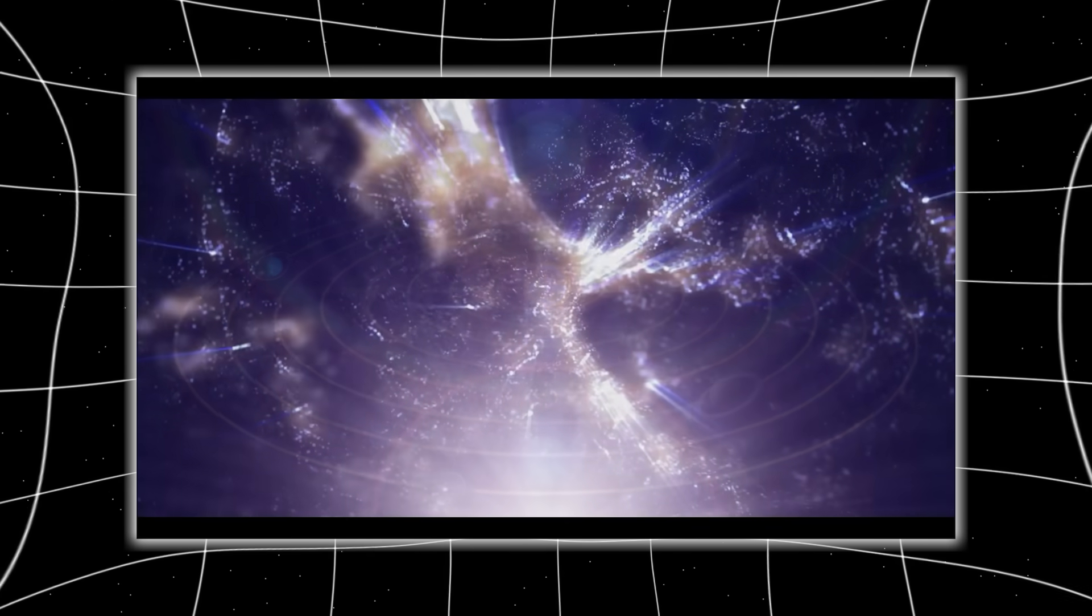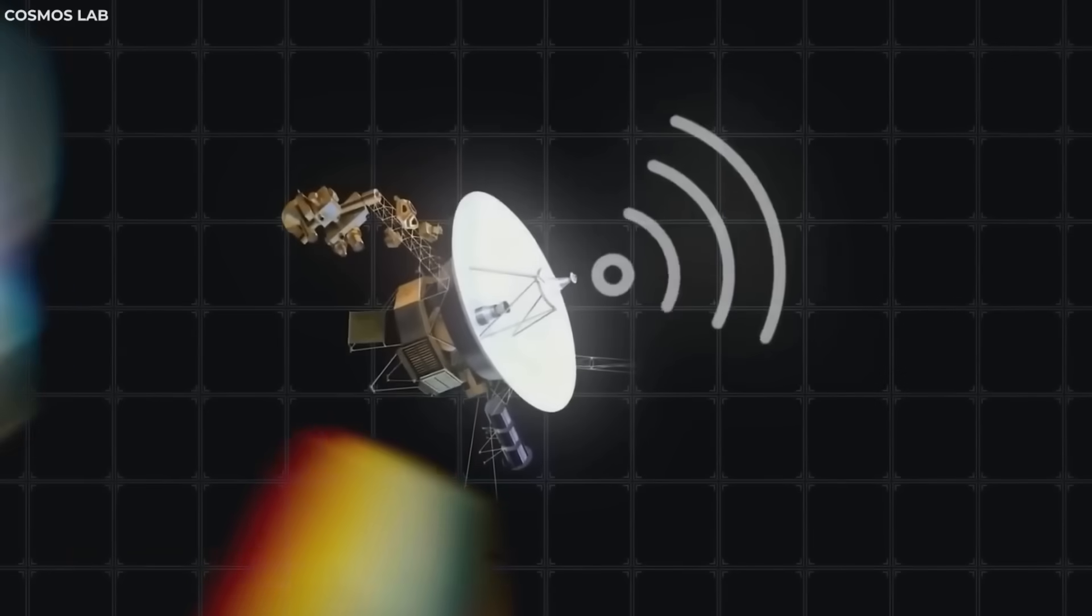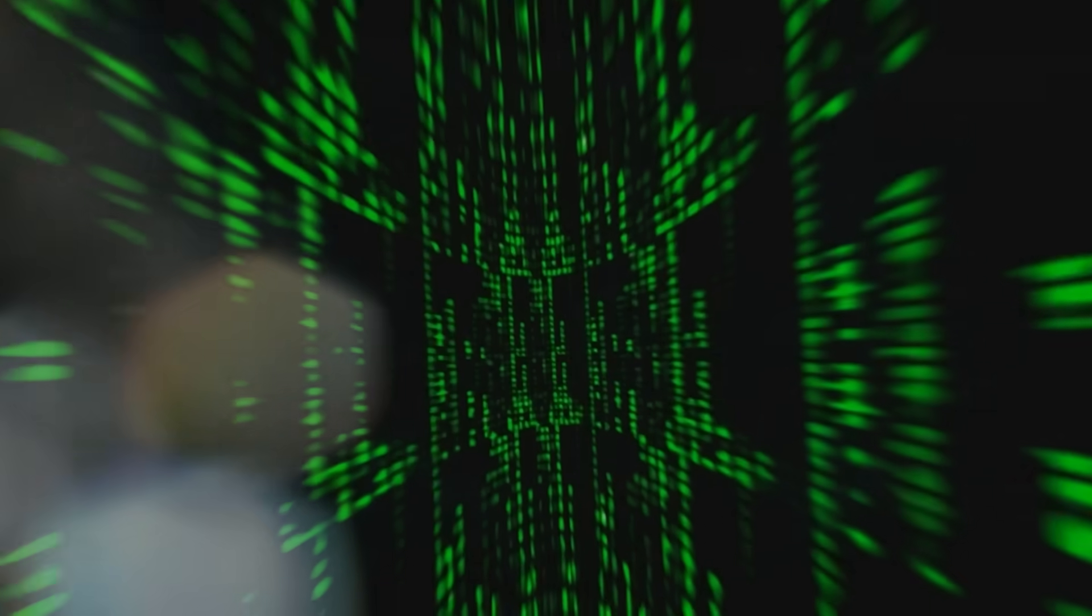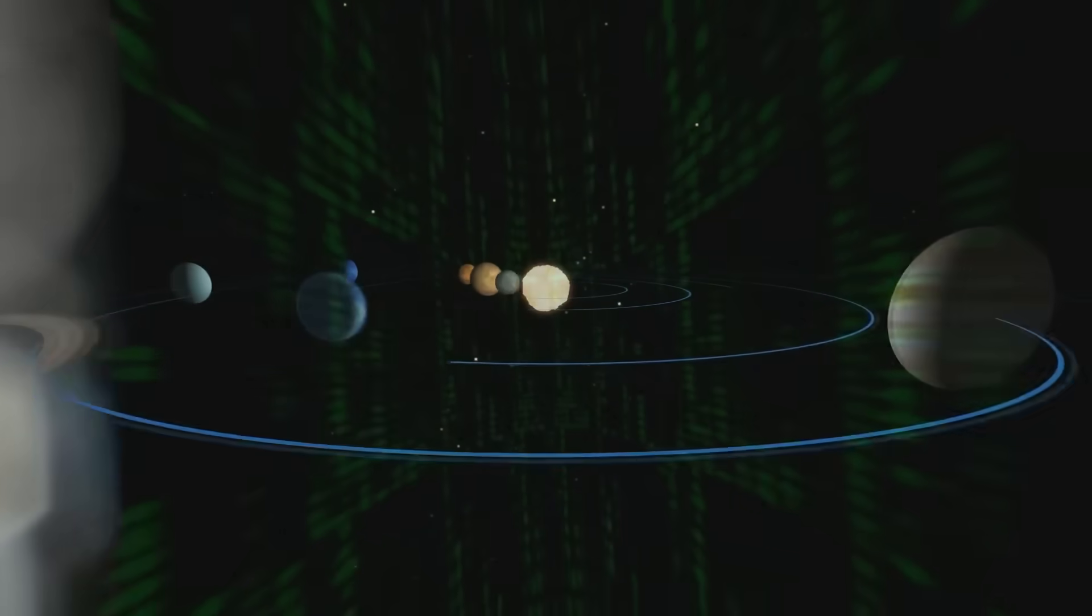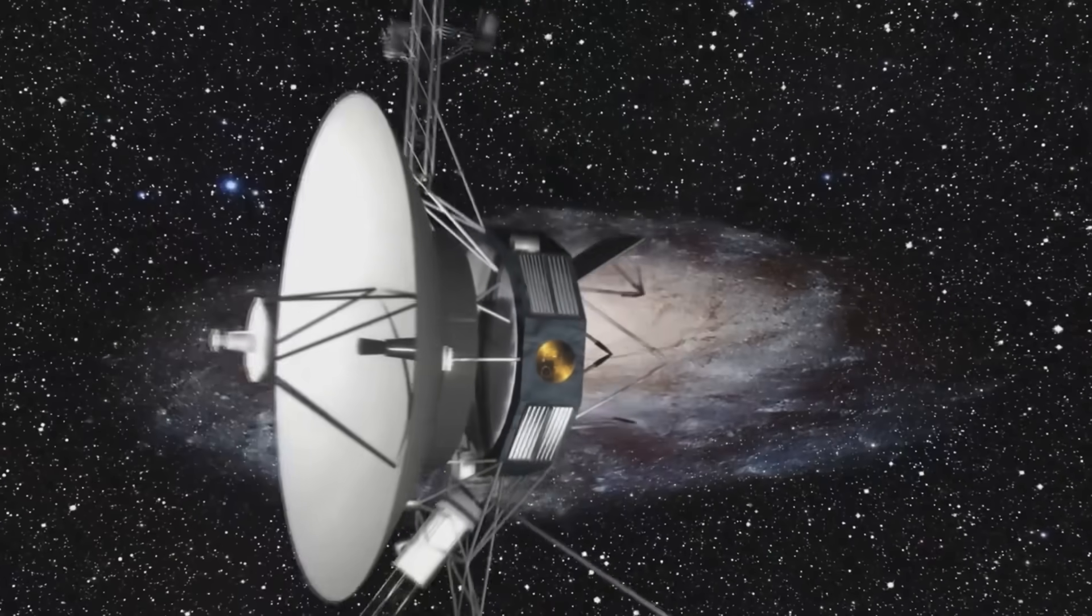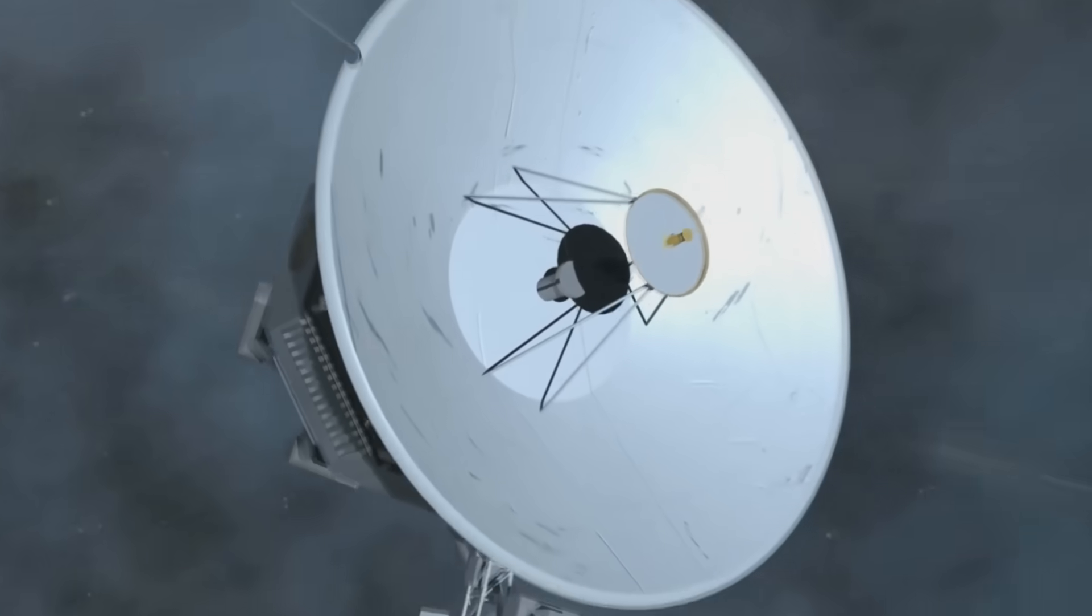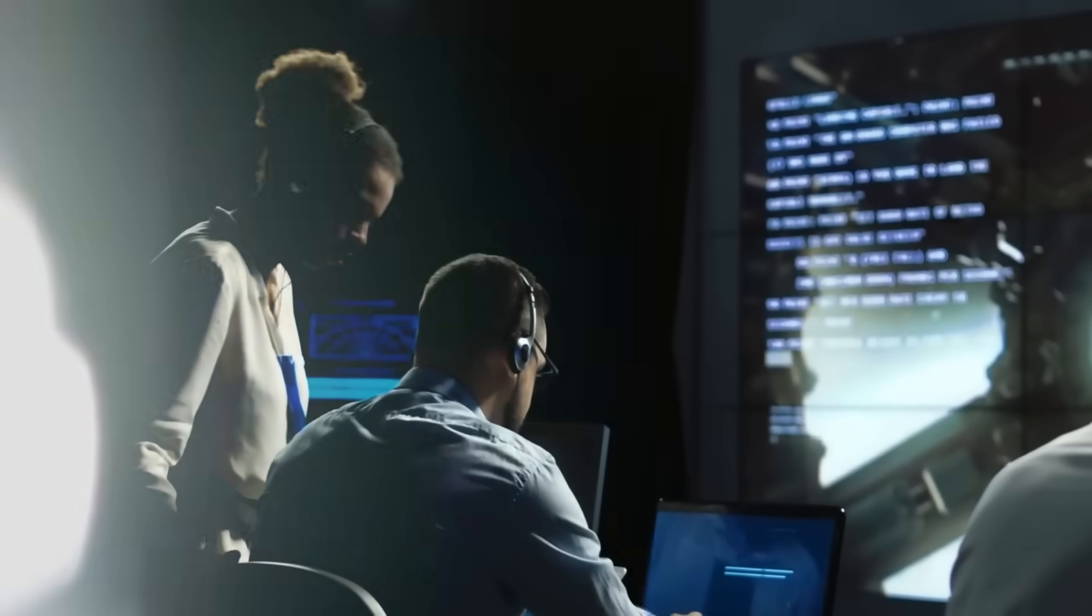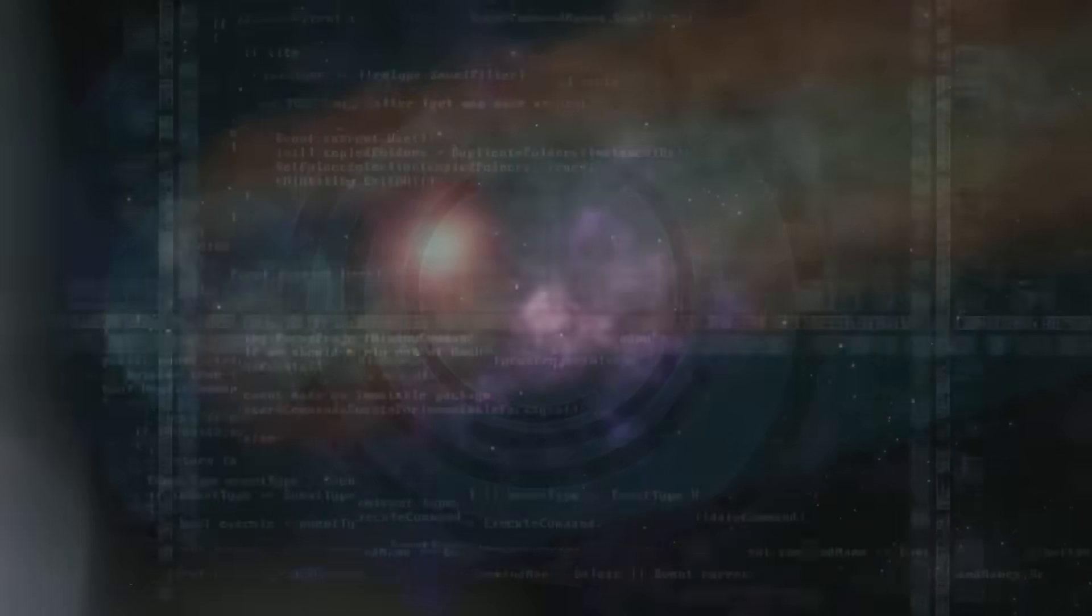Maybe the heliopause wasn't a wall. Maybe it was a window. One way. Directional. A filter that allowed signals out but dampened anything coming back in. If true, this would mean our solar system isn't just a bubble. It's shielded, perhaps deliberately. And Voyager 2 just punched a hole through it. Something on the other side might have noticed.